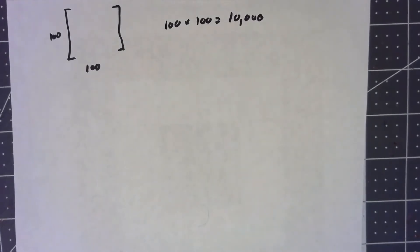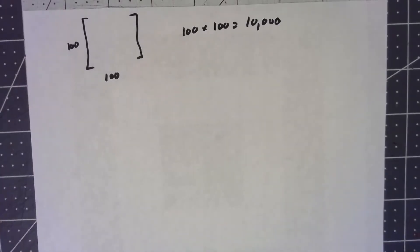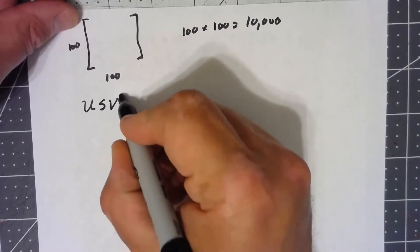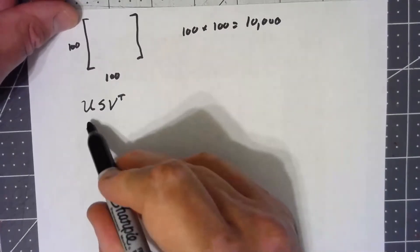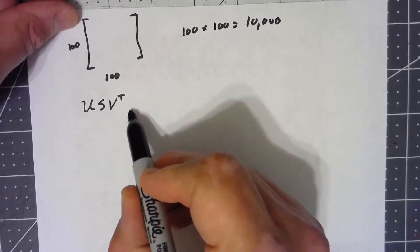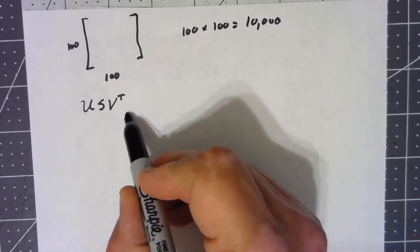Now if we're just doing a singular value decomposition, it's actually going to take more storage because if we have our U S V transpose, the U is going to be another 100 by 100 matrix. The V transpose would be a 100 by 100 matrix.